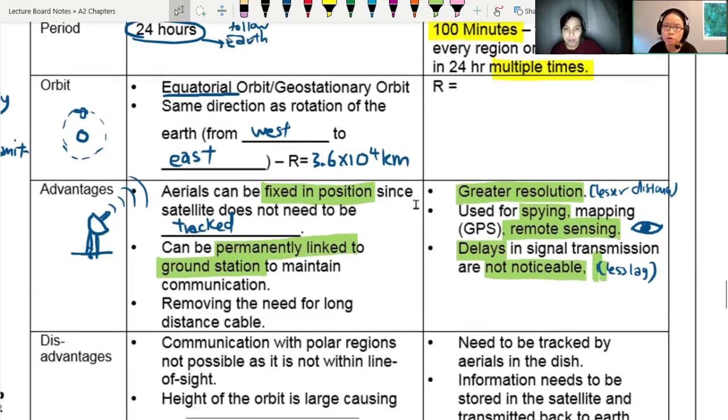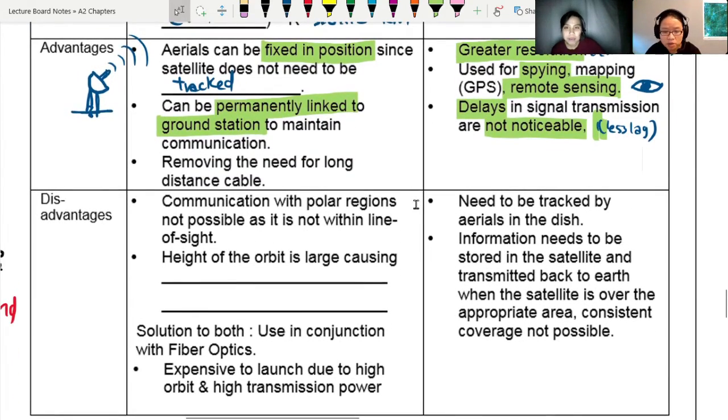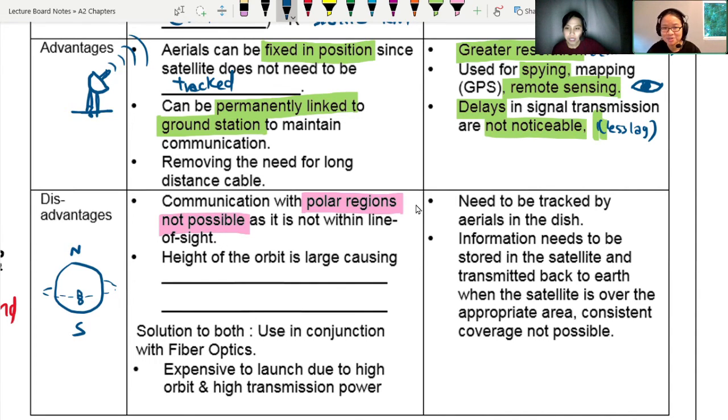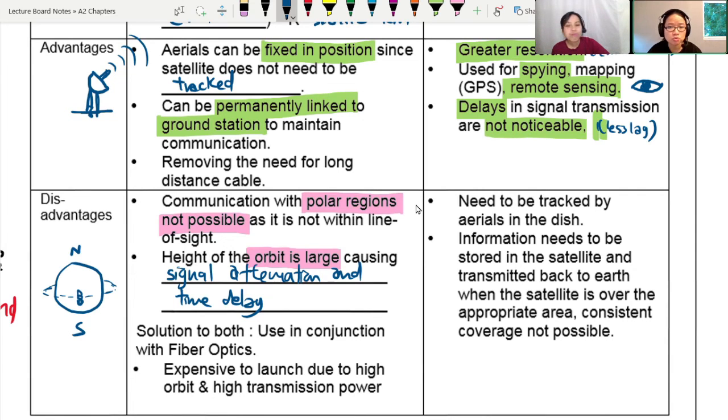If we compare the advantages, we should know the relative disadvantages. Communication with the polar regions is not possible. Because if you're along the equator, the polar is not within the line of sight. You cannot see. The satellite cannot see you if you build a radio mast at the north and south poles. And because the height of the orbit is large, it will cause signal attenuation and time delay. The signal travels very far away. The power will drop. And there will be some form of time delay. The solution is that we will use it together with optic fibre.